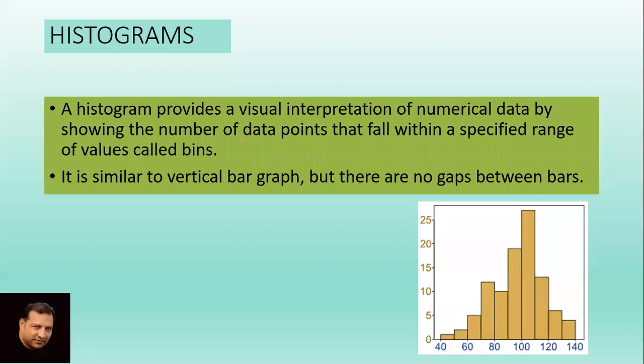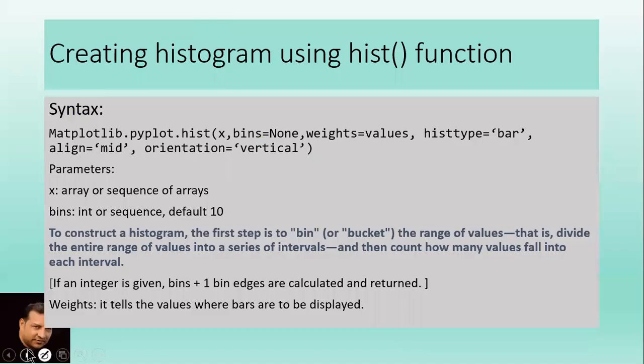These specified ranges are called bins. For example, see here at the bottom: 40, 60, 80, 100, 120, 140 - all these are called bins. It is similar to a vertical bar graph but there are no gaps between bars.